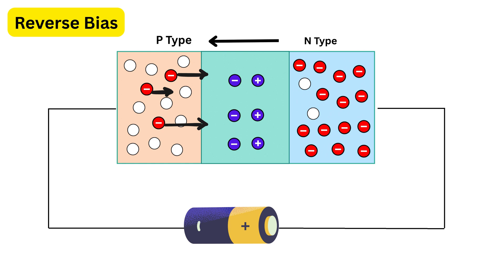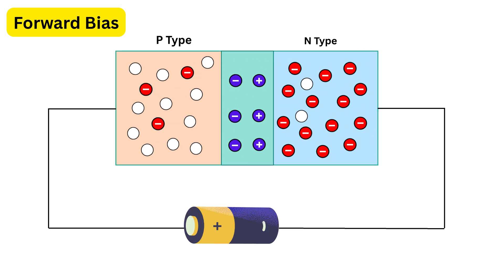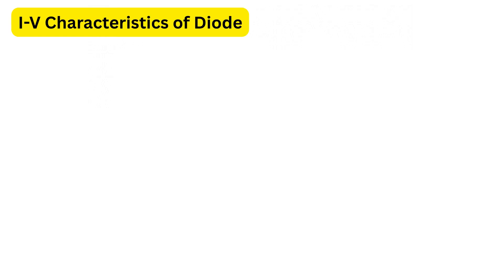Similarly, in case of forward bias, if the voltage is below the barrier—like less than 0.7 volts—a small number of carriers still get enough energy from heat to cross the junction, so a little current can flow, but it's very small and almost close to zero. We can now look at the IV characteristic graph of a diode.